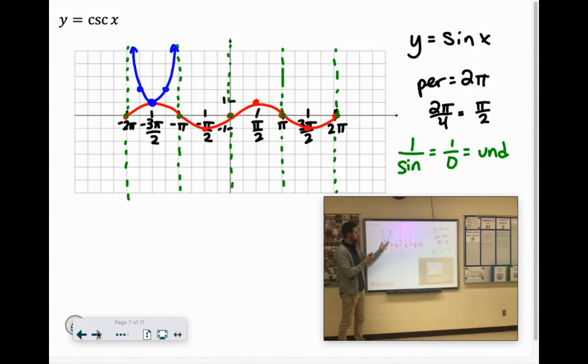So when it's a maximum point, you go up with it. When it's a minimum point, like down here at negative π over 2, you just go down with it.